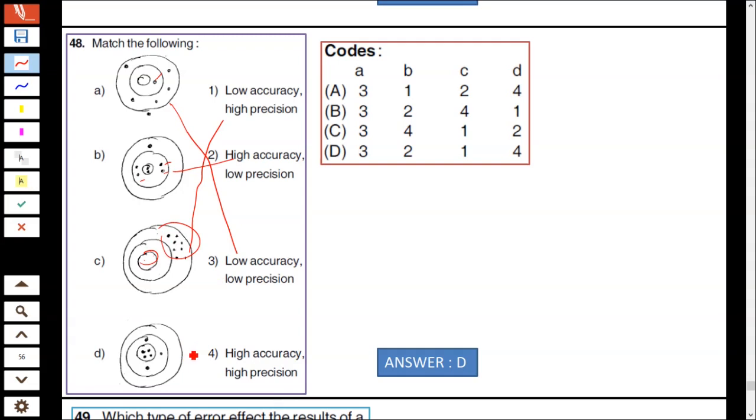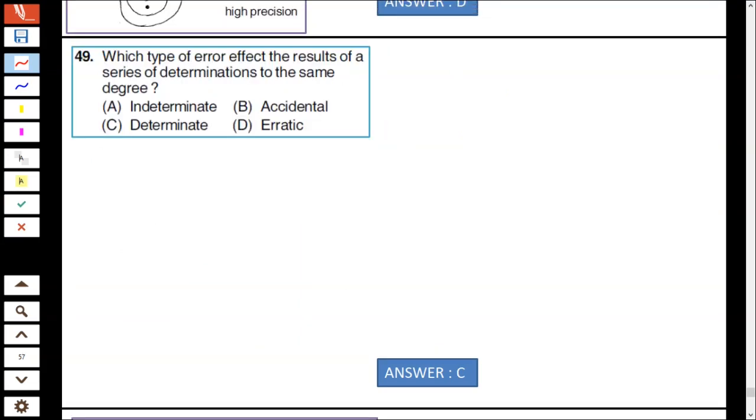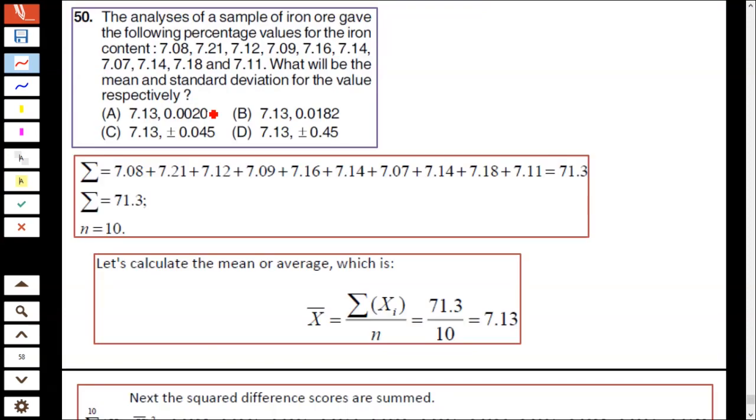Question number 49: Which type of error occurs when the result of a series of determinations varies to the same degree? Determinate error.